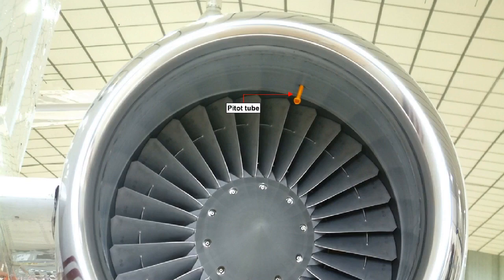Pitot tubes, suitably positioned, sense the pressures which are required to work the system. The tubes can either be connected directly to the indicator in the cockpit, or to a pressure transmitter which is electrically connected to the indicator.